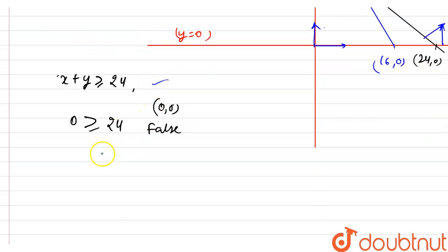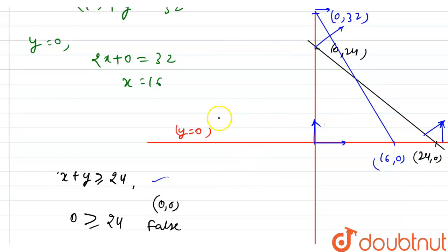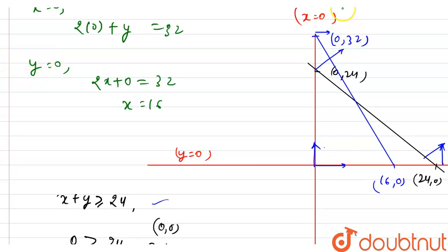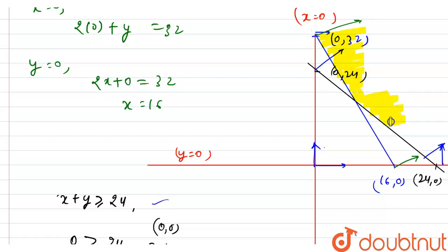Now I'm checking the second condition: 2x plus y greater than equals to 32. Putting (0, 0): zero plus zero is greater than equals to 32, which is also false. So the shaded area is again above this line. The common region for all four inequalities is the overlapping shaded area. This is the common feasible region, and this is the final answer for this question.